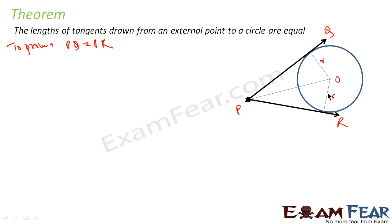I have two approaches. If I go by Pythagoras, we know that these lines are perpendicular — that is the theorem: the radius is perpendicular to the tangent through the point of contact. This is the point of contact; radius is perpendicular to the tangent through the point of contact.